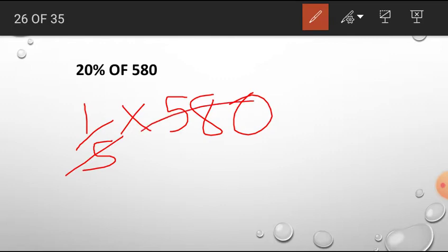And now, we are converting 20 percent into fraction. That is 20 percent means 1 by 5, of means into, and 580. So we can solve like this: 1 time and 1 time 30 means 6, so 116. Easily we can solve this.